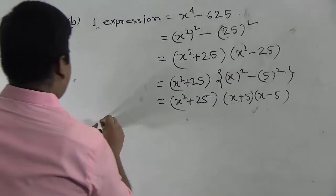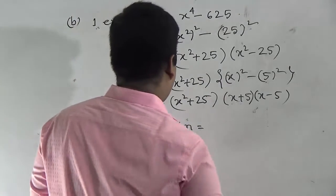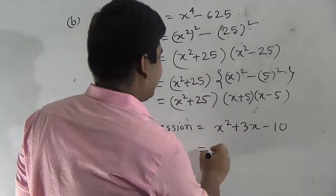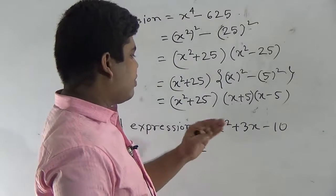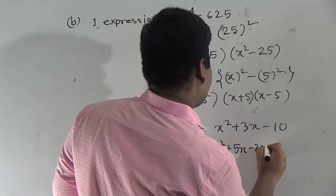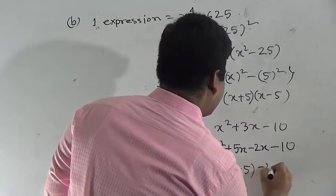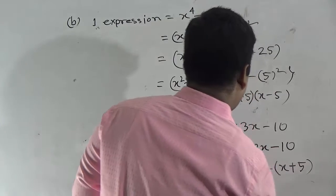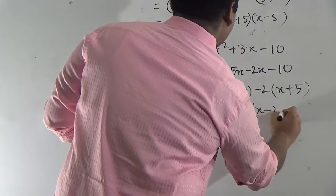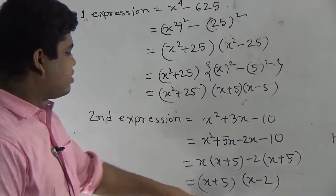Then the second expression — we have already learned this in question A. First multiply the first and last terms to get minus 10x squared. Then convert minus 10x squared into two factors: x squared plus 5x minus 2x minus 10. Here x is common from the first two terms, giving x(x plus 5). And minus 2 is common from the last two terms, giving minus 2(x plus 5). So x plus 5 is common from the whole expression, leaving (x plus 5)(x minus 2). Converting both expressions into factors is done.